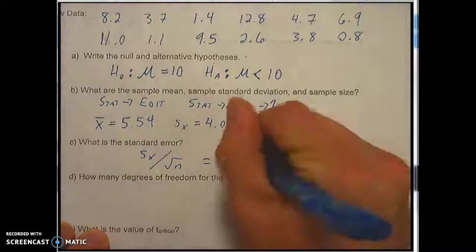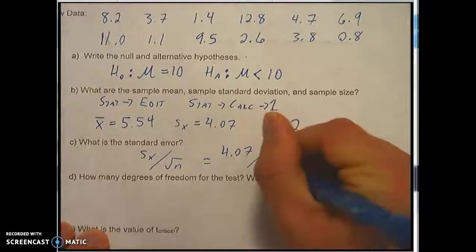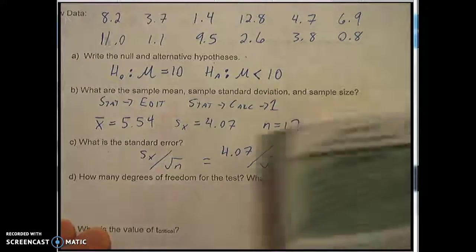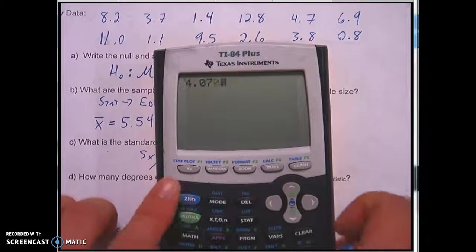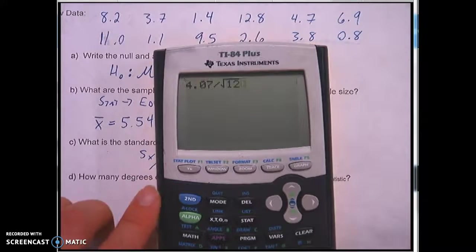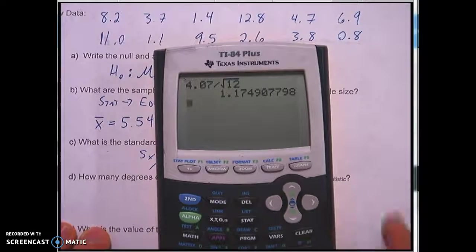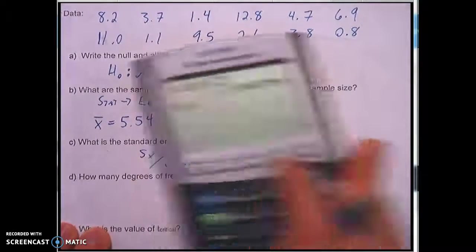So to find the standard error I'm going to do s sub x divided by the square root of n which is 4.07 divided by the square root of 12. And I'm just going to type that in my calculator and I got 1.175.